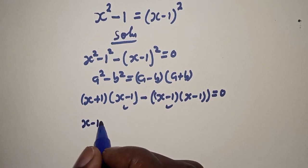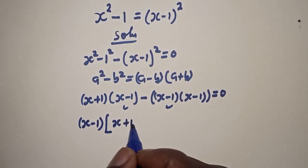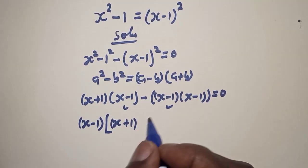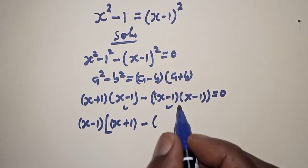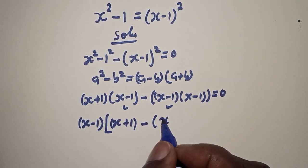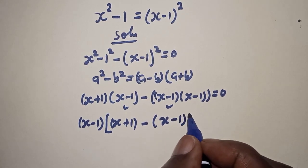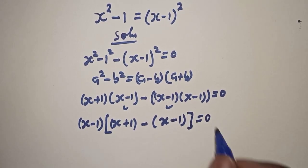s minus 1 bracket, here we have s plus 1 minus into minus bracket s minus 1 is equal to 0.